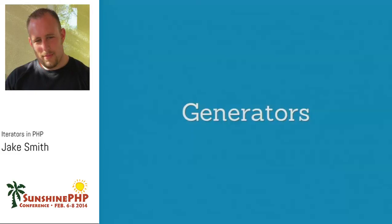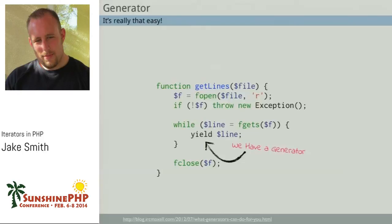PHP 5.5 introduced generators. A generator is an iterator that you can't instantiate. Once you see the syntax, you'll see how easy it is. A generator makes using iterators so much easier — remember that first slide where I showed all the methods you have to create every time you want to make your own iterator? All that boilerplate. Wouldn't it be easier to just write a regular function and use the yield keyword? And this is an iterator now.